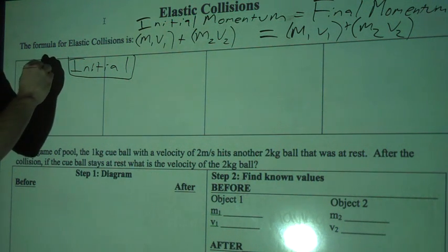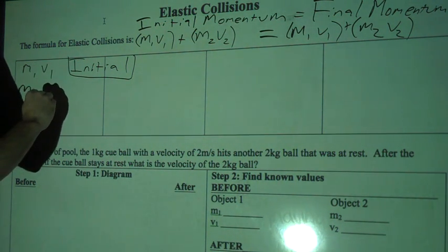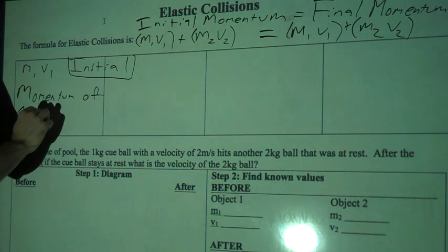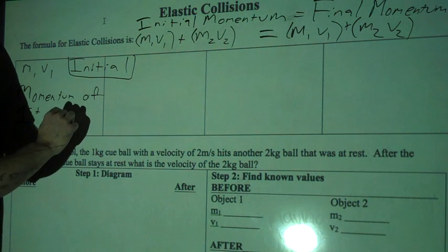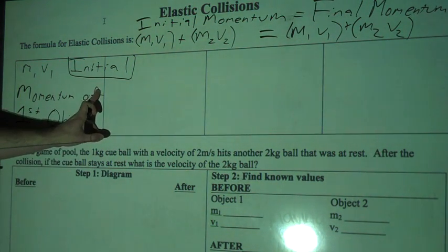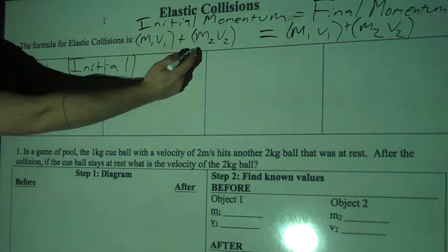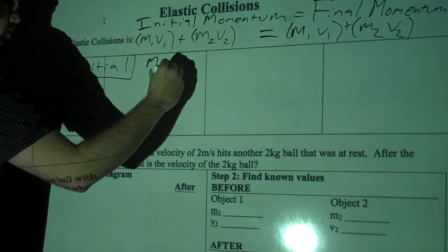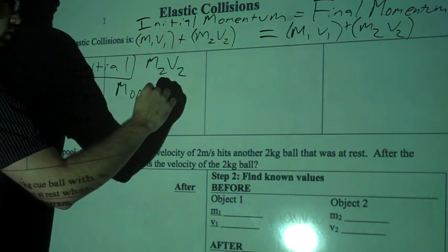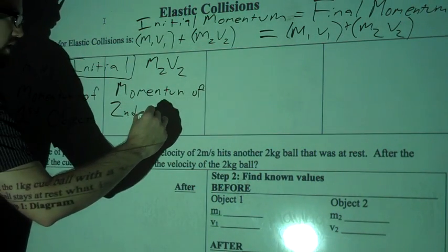This is the momentum of the first object, M1V1. So obviously M2V2 is going to be the momentum of the second object.